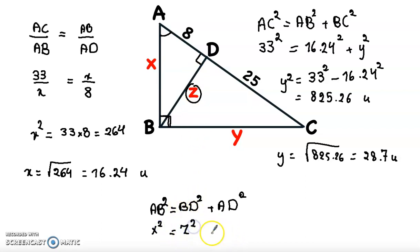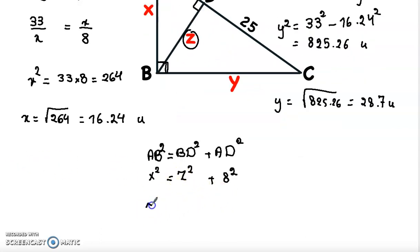Z squared, plus AD squared, 8 squared. So now Z squared equal X squared minus 8 squared, equal X 16.24, so 16.24 squared, minus 8 squared, equal 199.7. So Z equal square root of 199.7, equal 14.1 units.